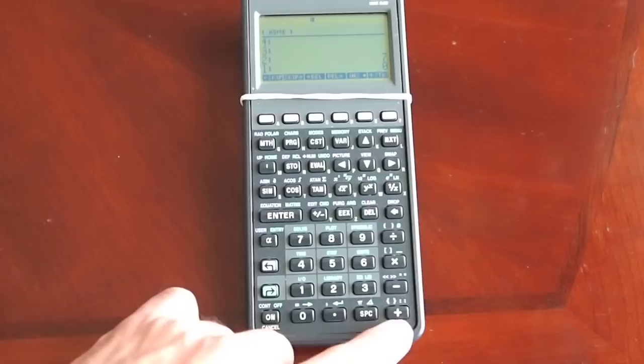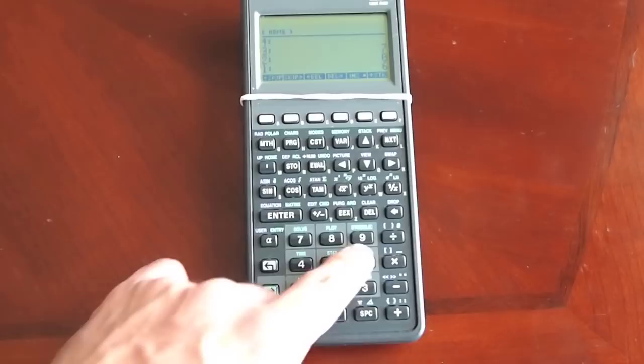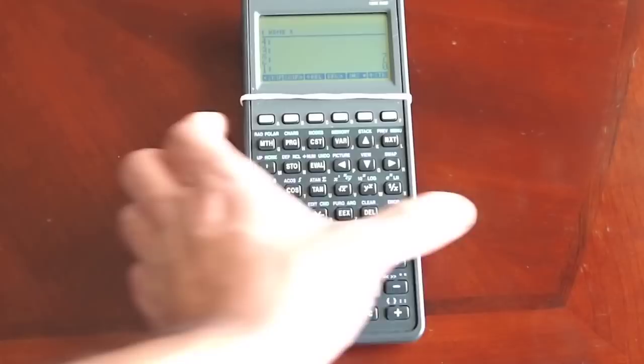Six plus zero is six, minus six is zero, times four is zero, divided by seven is zero.